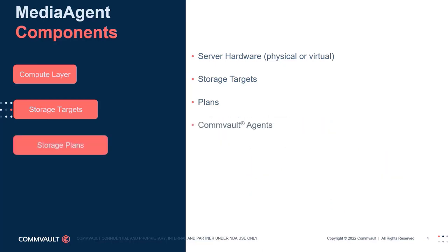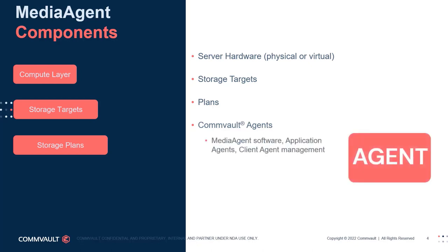Another component of a media agent is the software agent or agents required to communicate with production systems. Depending on the requirements, additional software can be installed on the media agent, which enables native communication with the production systems, reduces overhead, and enables data translation — for example, reading from one hypervisor and then writing to another.